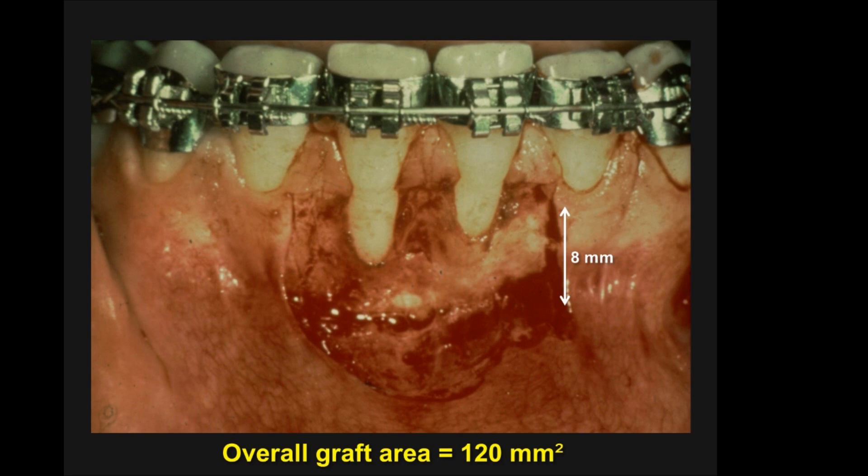In the 1980s the only surgical procedure for grafting was the free gingival graft — this is where it all began. In cases I did, I used three papillae. Even if I did not have recession on an adjacent tooth I always grafted it, not only to balance the graft across the facial but also to give me three papillae to suture to and help stabilize the graft.